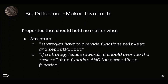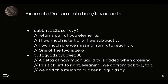There could also be structural invariants about how smart contracts in a complex protocol interact. For instance: strategies must override functions reinvest and report-profit. Or: if a strategy issues rewards it should override both the reward-token function and the reward-rate function. The moment you write that down, you will find violations — especially in a yield farming protocol with 50 different strategies. Similarly, document things like subUntilZero(x, y) returns either x−y or y−x, whichever is non-negative.